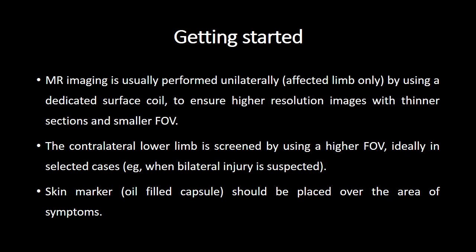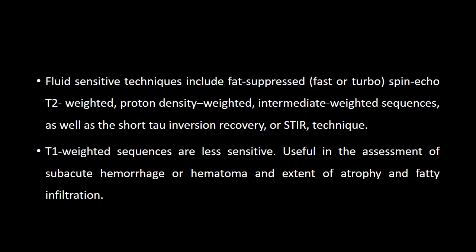MRI is usually performed unilaterally of the affected limb using a dedicated surface coil. The contralateral limb can be screened using a higher FOV, especially when bilateral injury is suspected, and a skin marker whenever available should always be placed over the area of maximum symptoms. Fluid sensitive sequences like fat suppressed T2-weighted images, proton density images, and STIR images are extremely useful for evaluation of muscle injuries. T1-weighted images are less sensitive; however, they are useful in the assessment of hematomas and to detect extent of atrophy and fatty infiltration of muscles.